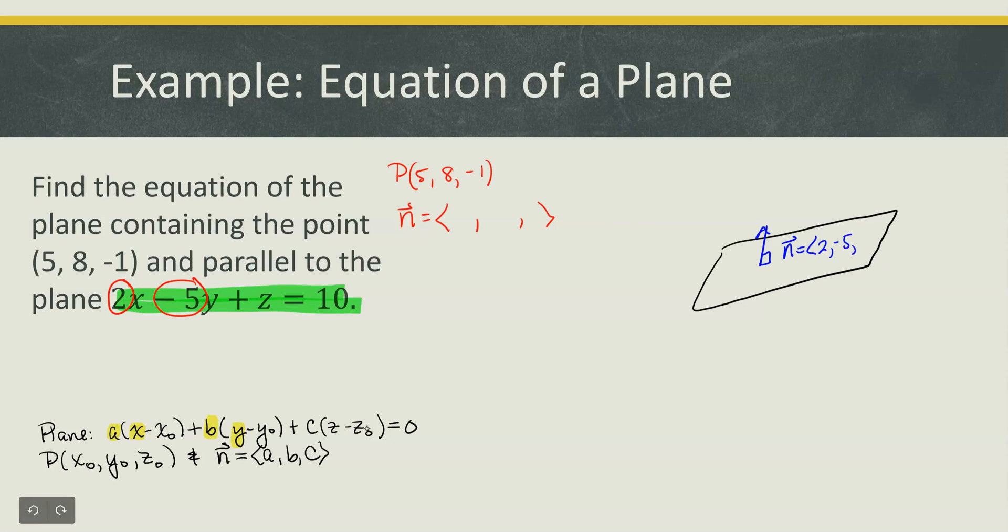And then in the equation we would have c times the variable z. So the coefficient of z should be the third component or c within the normal vector of the plane. So this will be 1. So the normal vector to the plane we already have is 2, negative 5, 1.